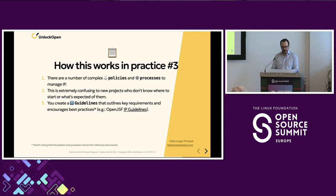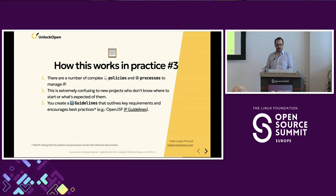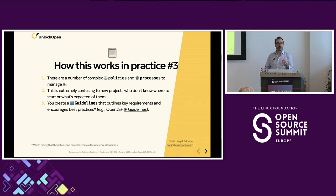Third example — the guidelines. There are a number of complex policies and processes to manage IP, and this is extremely confusing to new projects who don't know where to start or what's expected of them. You write a guideline for that: it outlines the key requirements and shows best practices. It doesn't replace existing policies or processes; it just outlines the ones that matter for that specific task and drives best practices. It's the 20-80 rule — you want to make something that is 20% of all the other policies combined, and it works for 80% of use cases.